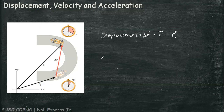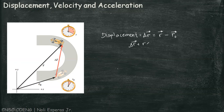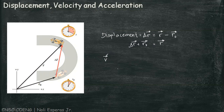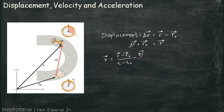We can see that the sum of r-naught and the displacement is equivalent to the final position. For the average velocity — symbolized as v with an arrow on top since it is a vector — it is the displacement divided by the elapsed time, or delta r over delta t.